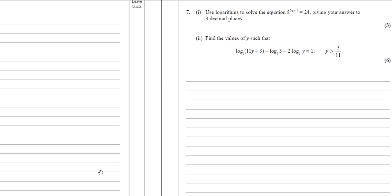Let's have a look at the 2015 paper. Again, it's question 7, so it's quite late on and the questions should be getting a little bit harder. But the first three marks are pretty much a giveaway here. So 8 to the power of (2x + 1) = 24. There are a couple of ways we can do this. We could split it as 8^(2x) times 8^1 = 24 and go from there.